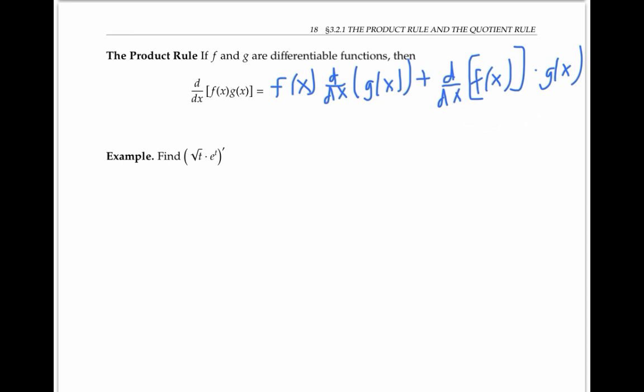Let's use this in an example. To take the derivative of the square root of t times e to the t, we have to take the first function square root of t times the derivative of the second function, plus the derivative of the first function times the second function.